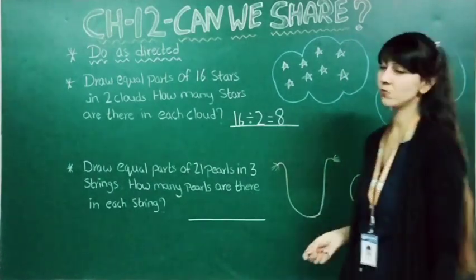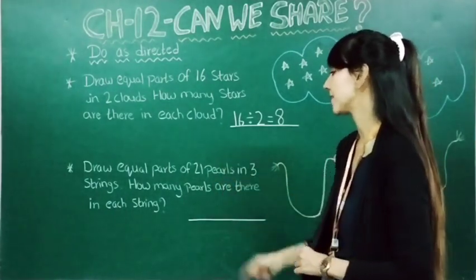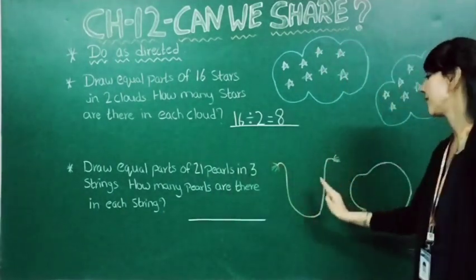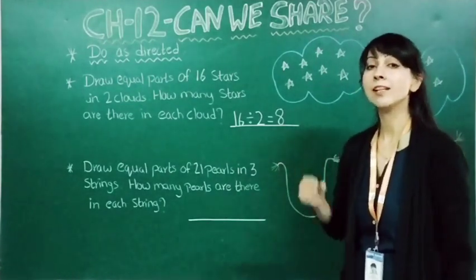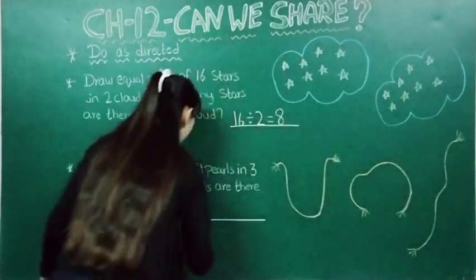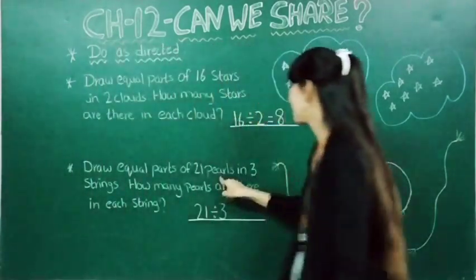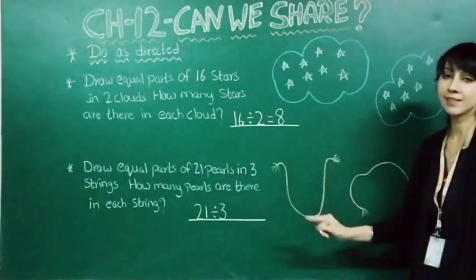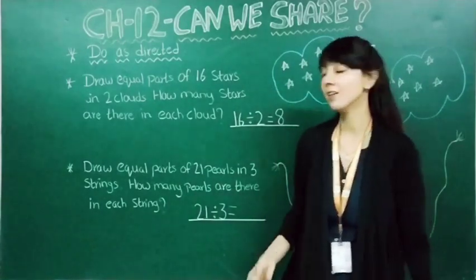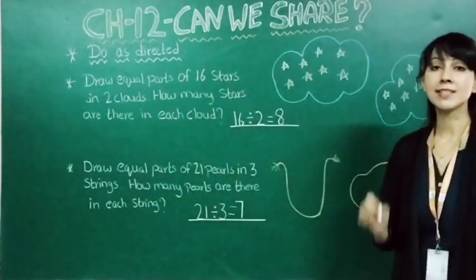Now we will draw equal parts of twenty-one pearls in three strings. How many pearls are there in each string? Here you can find three strings, and we have to draw twenty-one pearls in equal parts. So twenty-one divided by three, because twenty-one pearls are there and three strings are there. When twenty-one comes in the table of three? Three sevens are twenty-one, so here it will come seven. In each string we will draw seven pearls.